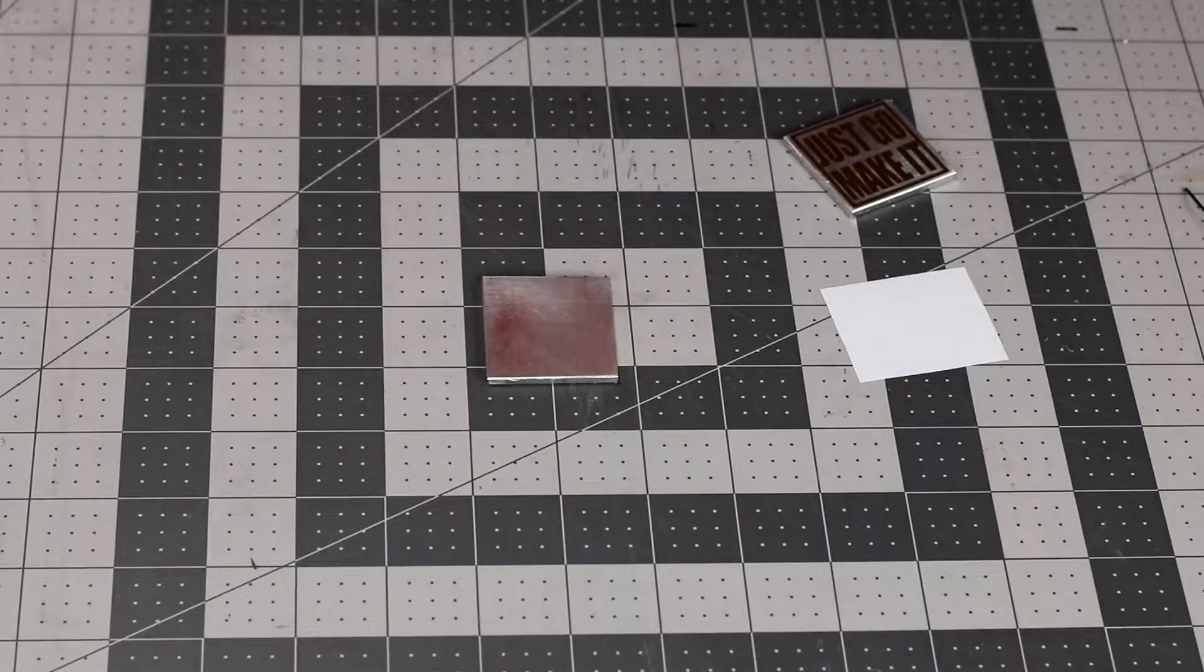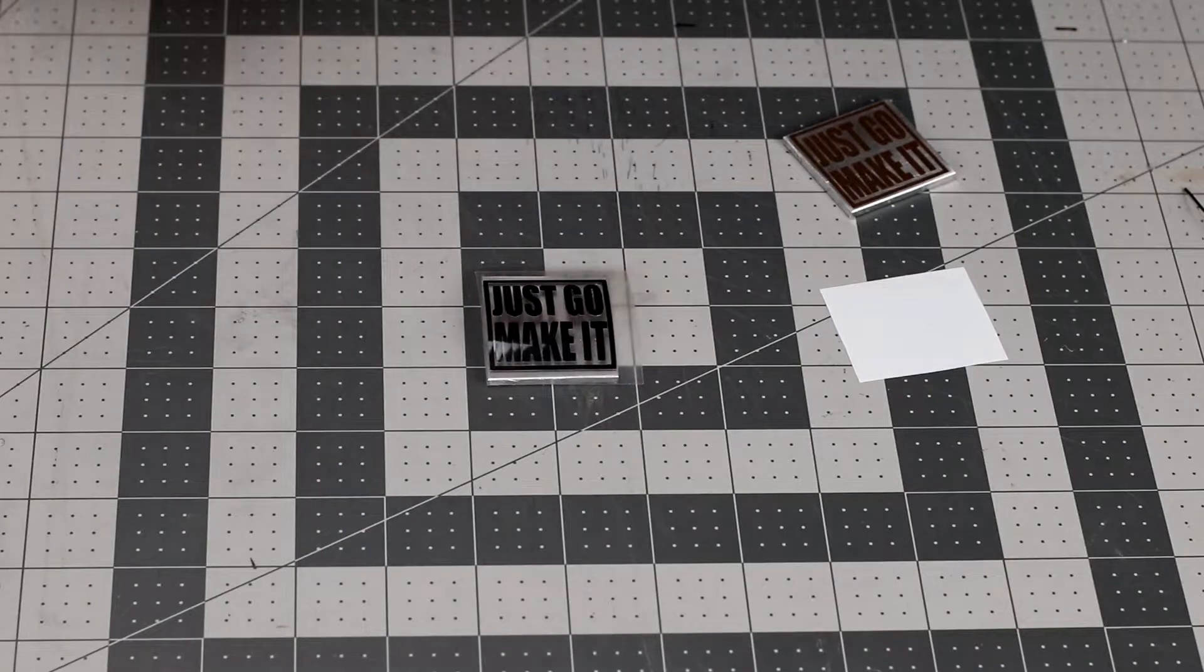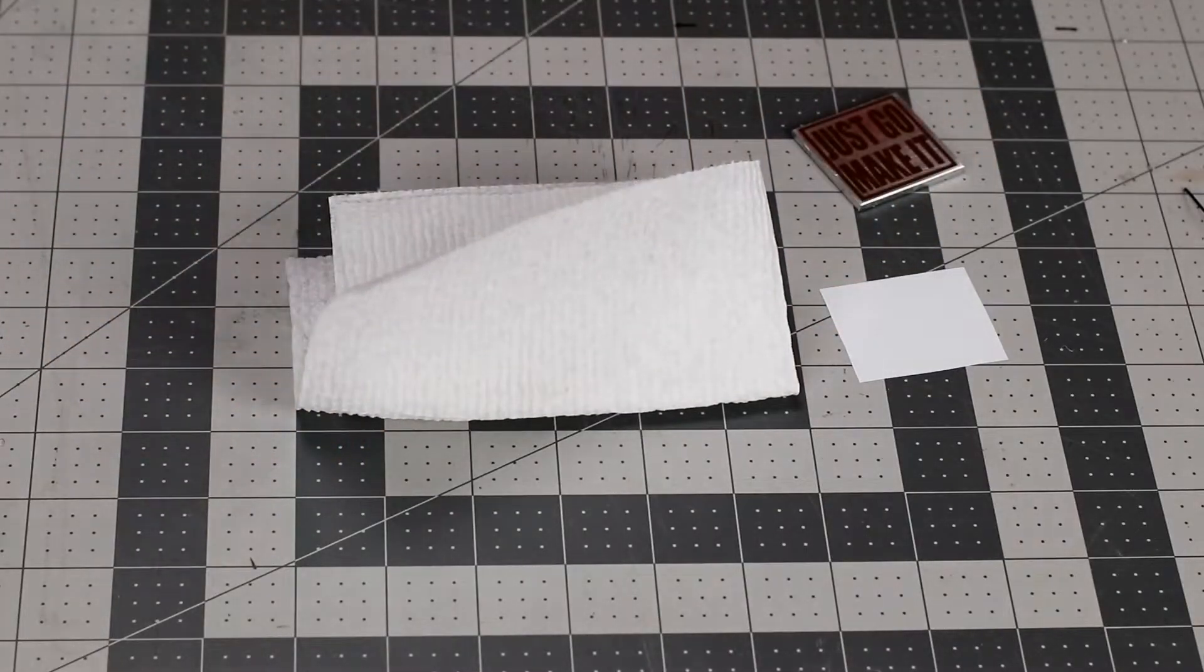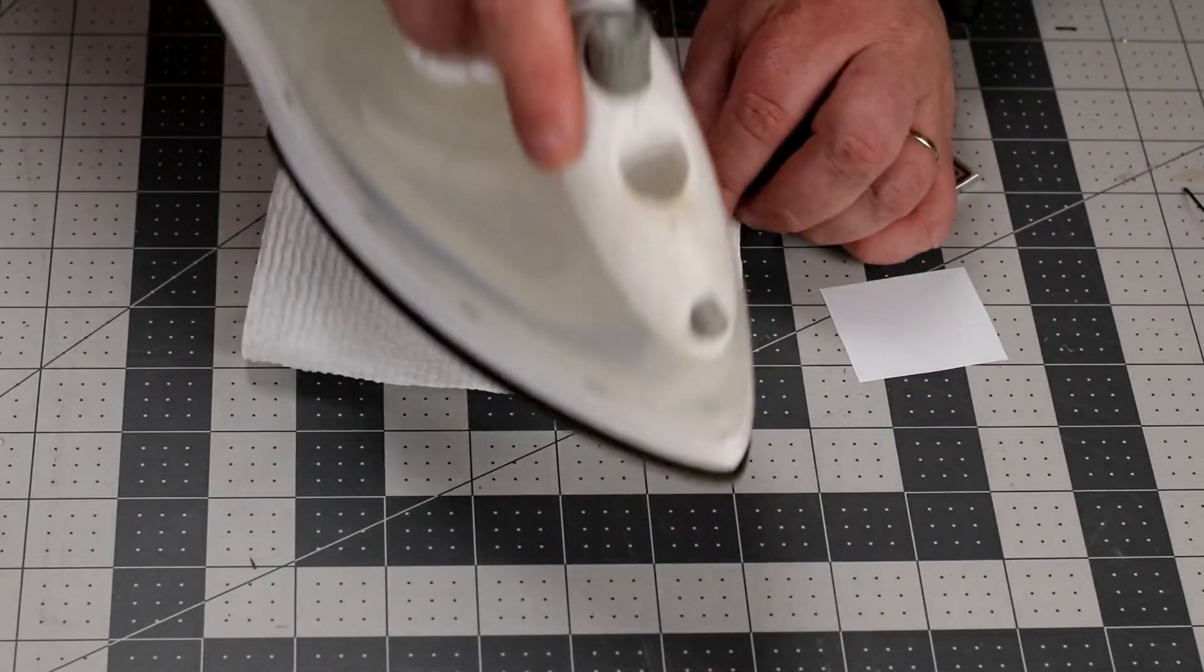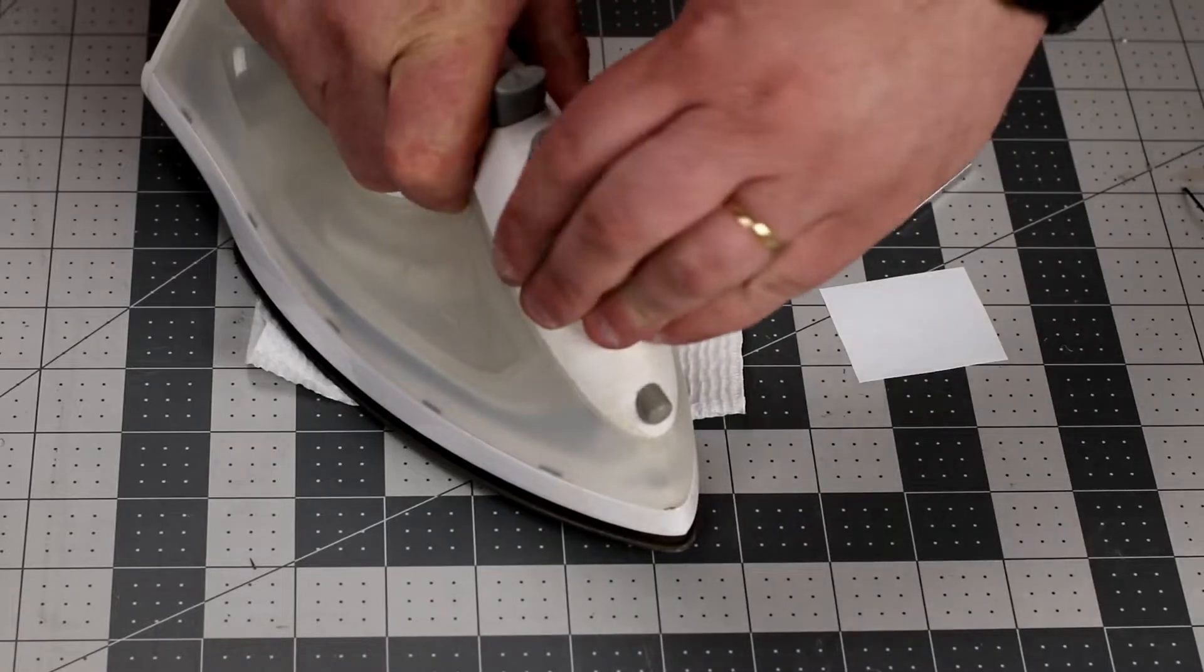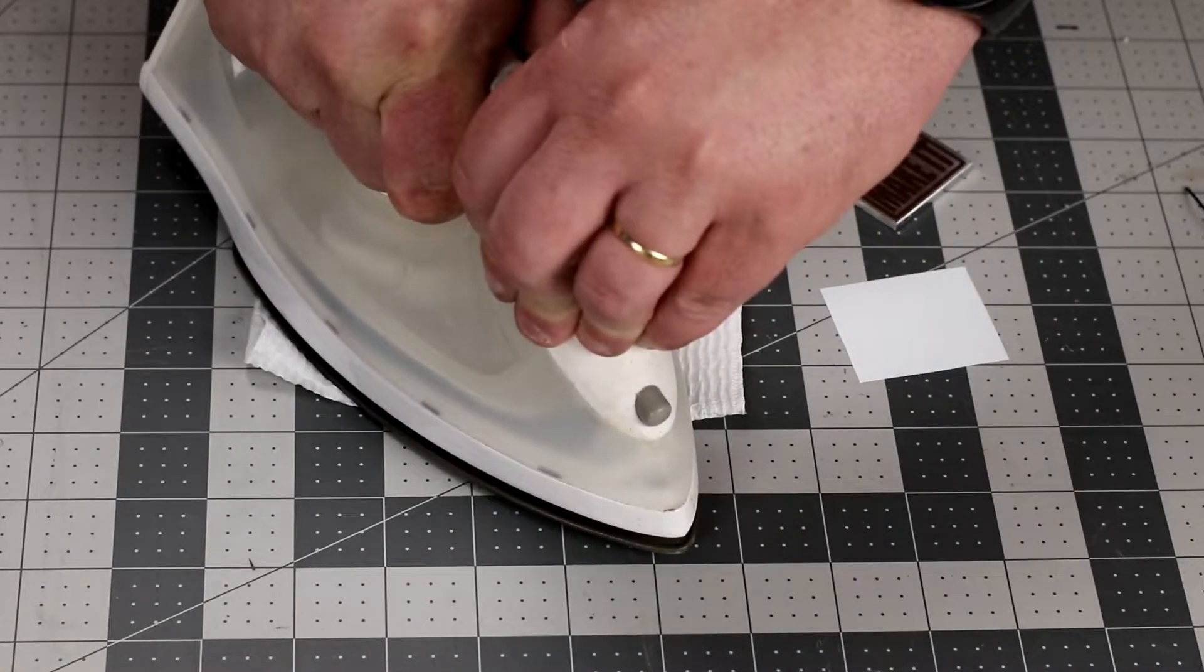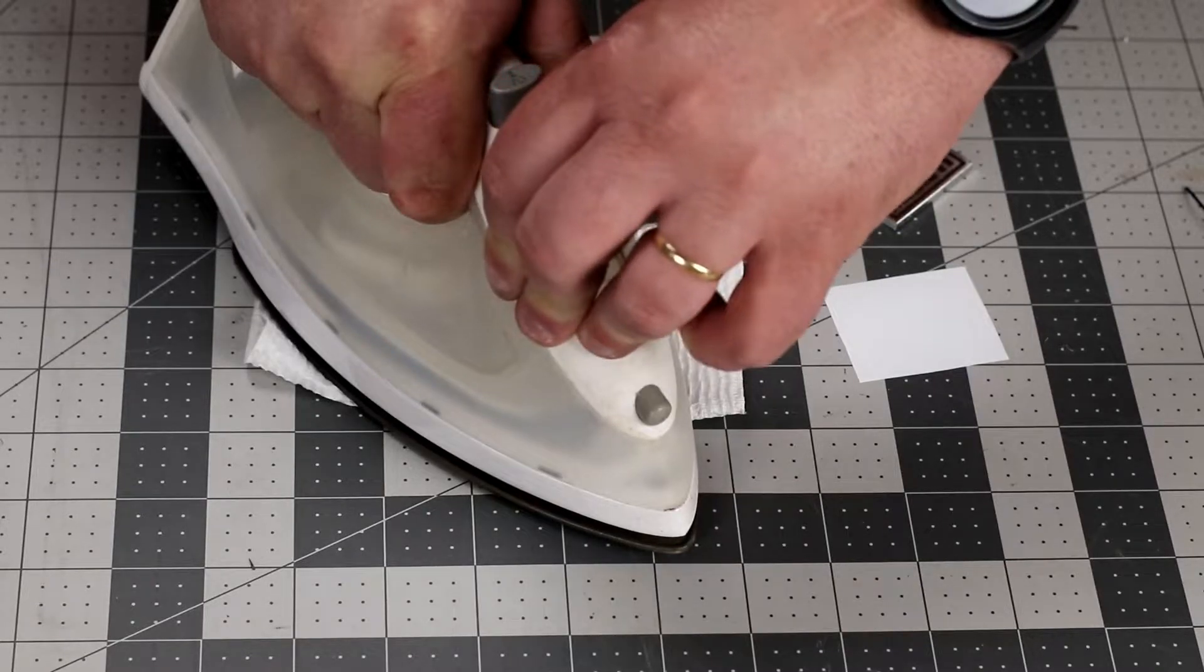So the next one I'm going to do the iron-on. Take a bit of paper towel to put over it and I'll press down nice and hard with my iron. Make sure it hasn't moved any. Give this 30 seconds or so.